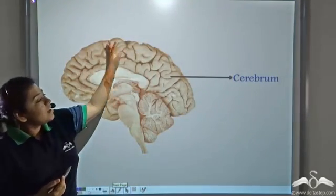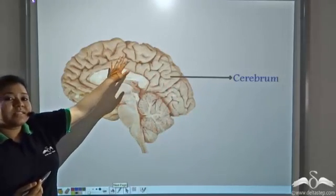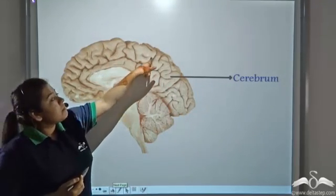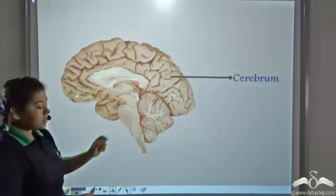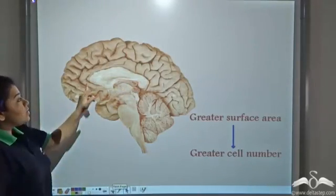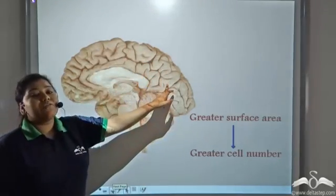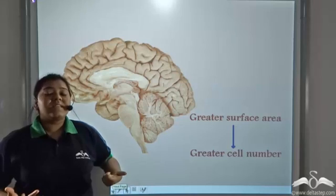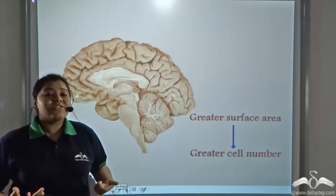This is the outermost part of the brain or the cerebrum and it has many convolutions. More the number of convolutions, more is a person's intelligence level.